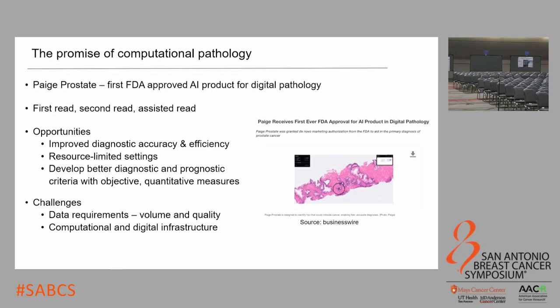There are big implications for resource-limited settings — places like the rural U.S. or lower and middle income countries where access to subspecialists may be limited. AI could help provide gold standard diagnosis for those patients, which is really significant. There's also potential in the future to develop better diagnostic and prognostic criteria using objective and quantitative measures. The challenges include significant requirements on the size and quality of data. When developing algorithms, you need large datasets representing the clinical phenotypes, histologic phenotypes, and the variability you would see from lab to lab in practice. There are also issues with computational and digital infrastructure needed to run algorithms and deliver results to the pathologist.